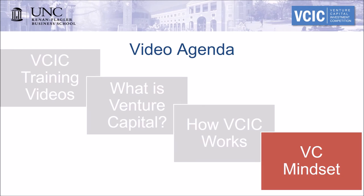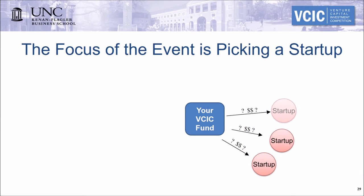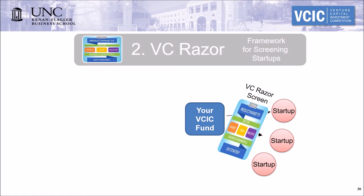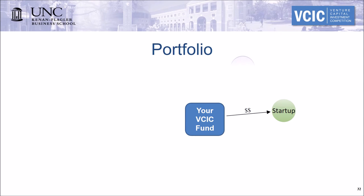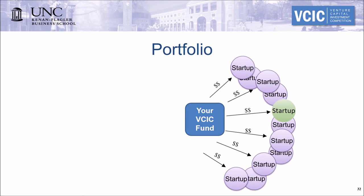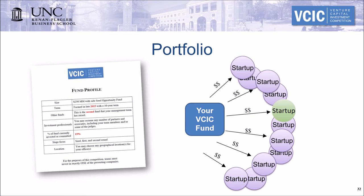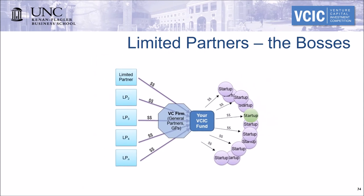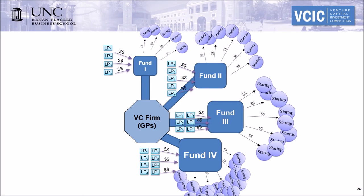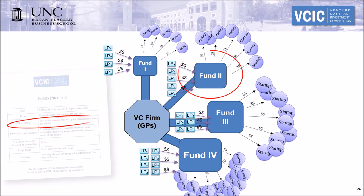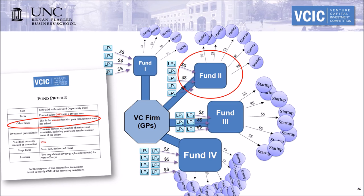Now let's take a step back to look at the broader picture and really start to think like a VC. At a VCIC event, you'll have two to three startups pitching and your team will have to pick one startup in which to make an investment. You should be aware that the one startup you pick at VCIC will be part of a portfolio of startups in your fund. You'll be given a fund profile that tells you the size of your fund, which will determine how many companies you can invest in and how much you have to invest in each startup. You should also know that limited partners supply the capital, and that this fund is one of a series of funds your VC firm will raise — typically you are on your second fund, meaning you've already raised a fund one and are probably planning to raise a fund three.